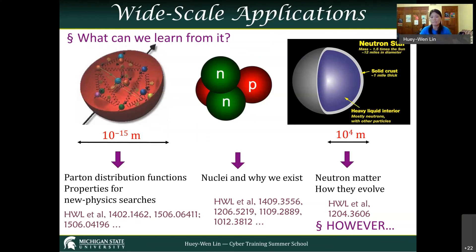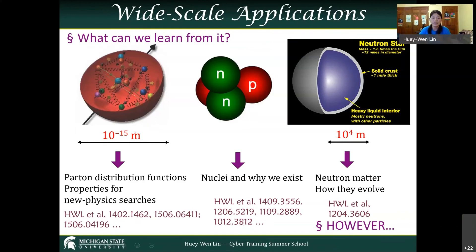If you put a bunch of nucleons together, that forms nuclei sitting inside the center of atoms. We try to understand why certain nuclei exist, why some don't exist in nature, why some element combinations are the only stable ones. This is a big research field. There are also wide-ranging astronomical applications — we study things at the femtometer scale, 10 to the minus 15 meters, with applications including neutron stars.